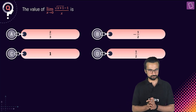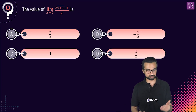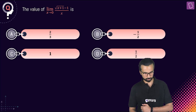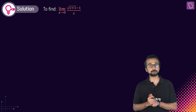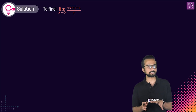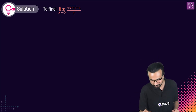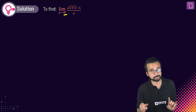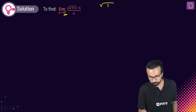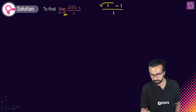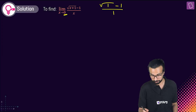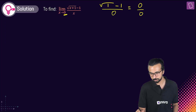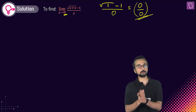Look at this question — we have to find the value of this given limit: limit x tends to zero of root of (x+1) minus 1, divided by x. Let's try substituting first. When x tends to zero, we get root of (0+1) minus 1, divided by zero — which is zero by zero, an indeterminate form.